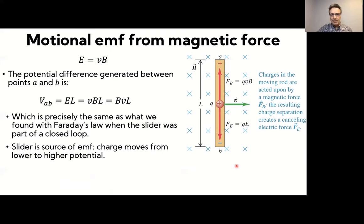Now, if you have an electric field established, that will result in a potential difference between A and B. And so that potential difference is this field strength times the length over which you consider the potential difference. So that's going to be E times L. The electric field is VB, and so we find just as before that the potential difference or that EMF is BVL. That's exactly the same as what we found before with Faraday's law when this was part of a circuit.